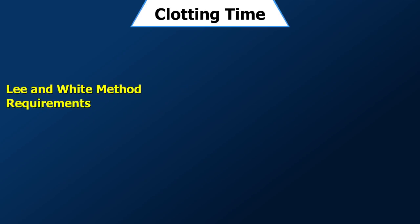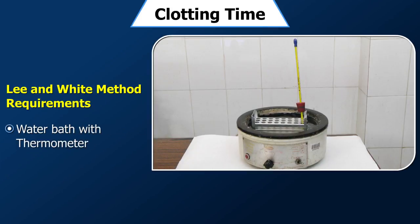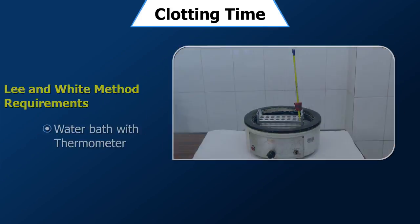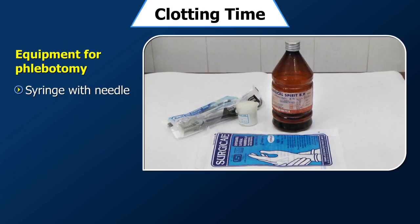Lee and White method. Requirements: standard size tubes, water bath with thermometer, and equipment for phlebotomy including syringe with needle, spirit and swabs, and gloves.